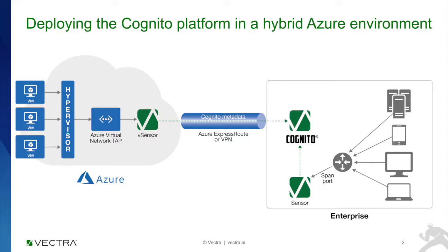For our enterprise customers, it means they can extend the usefulness of their Cognito platform in the enterprise estate to the Azure cloud environment. Today in the enterprise estate, the Cognito platform is getting metadata from sensors and virtual sensors distributed throughout the organization. Now a virtual sensor running natively in Azure can receive network traffic data from the virtual TAP, extract the metadata, and send it through an Azure Express Route or VPN tunnel to the Cognito brain, providing full visibility into the threat landscape in both the enterprise and Azure cloud environment.